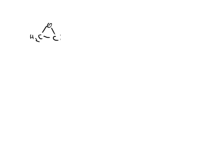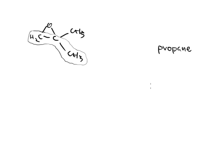Let's do one more: CH₂ with an oxygen and a carbon bearing two CH₃ groups. Longest carbon chain going down: 1, 2, 3 — propane. On carbons 1 and 2, that's where the epoxy group is. On carbon 2, there's also a methyl group. Alphabetical order: E before M. So this is 1,2-epoxy-2-methylpropane (IUPAC).